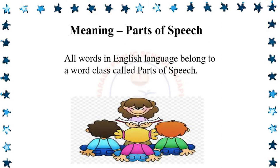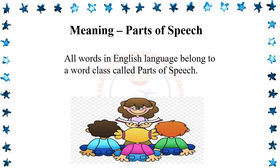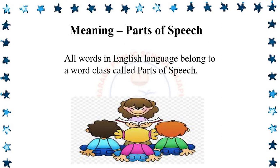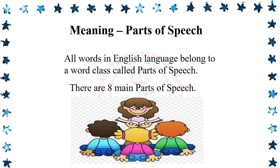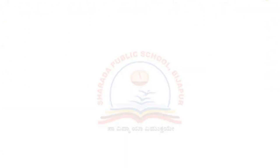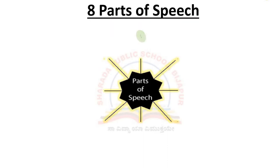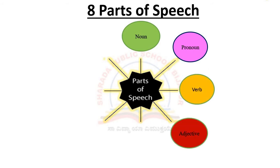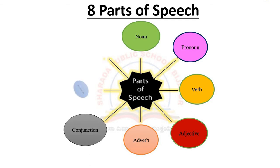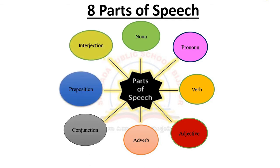All words in the English language belong to a word class called parts of speech. There are eight main parts of speech. They are noun, pronoun, verb, adjective, adverb, conjunction, preposition, and interjection.